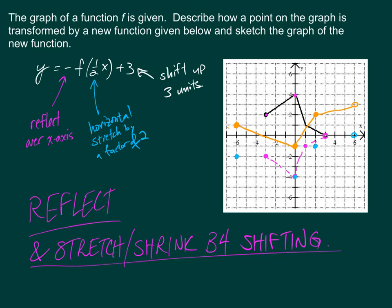This orange graph is what we are after for this transformed graph. If you went through and did each transformation for each particular point the graph started with — these four points — you would see that they all ended up in the same place, and you would just connect them from left to right.